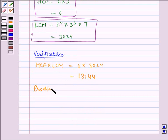Similarly, product of two numbers is equal to 336 into 54 which is equal to 18144.